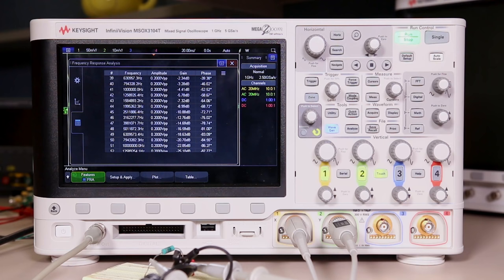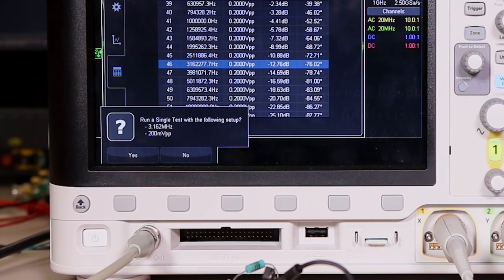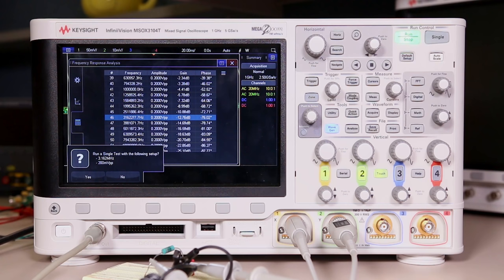And one last thing you can also select one of the rows in the table and a dialog box will pop up allowing you to run a single test at that specific setup frequency to do further analysis at that frequency point. So this can be really helpful if you see something that's abnormal at a certain frequency in your Bode plot and you want to analyze that further and see what's going on at that specific frequency.